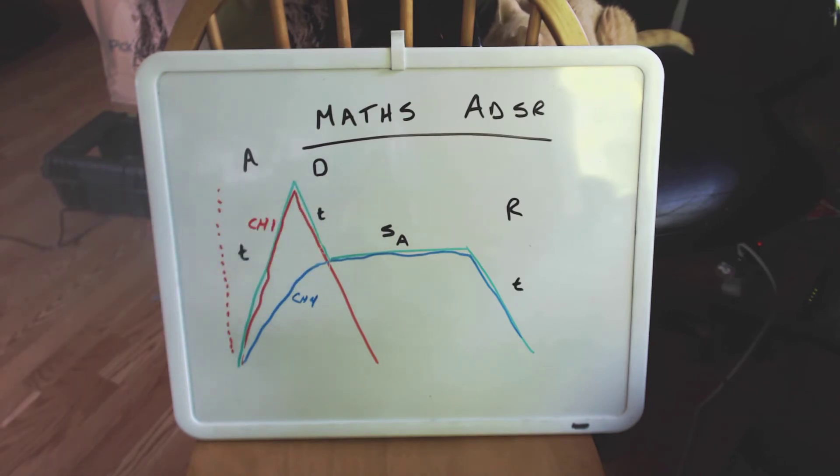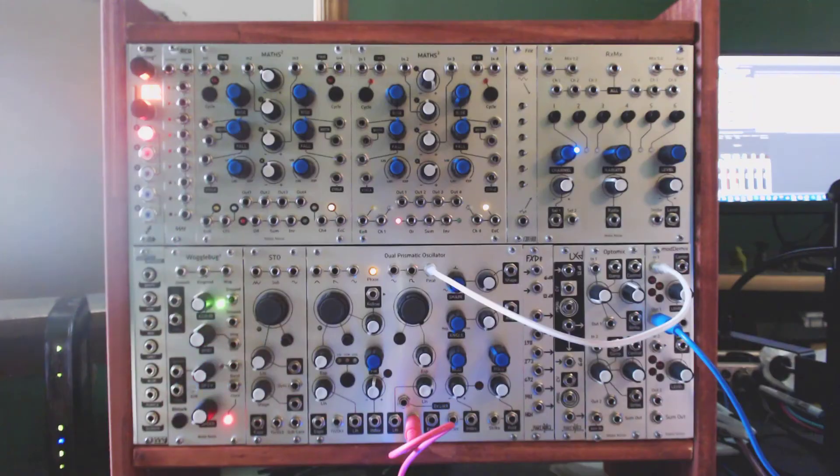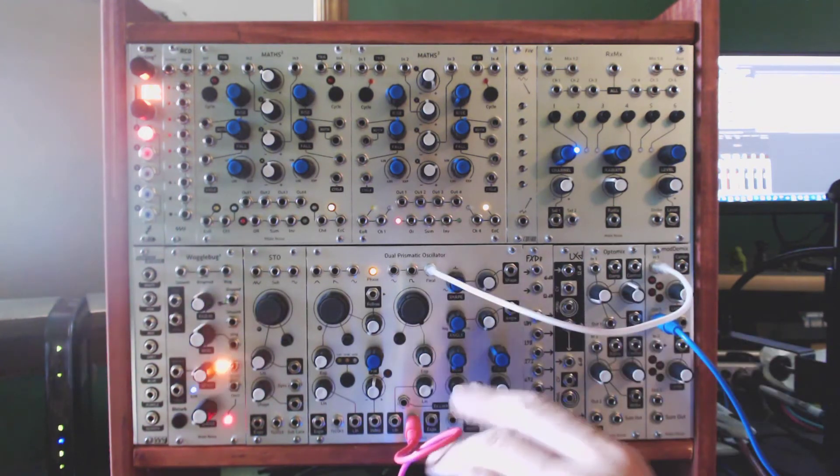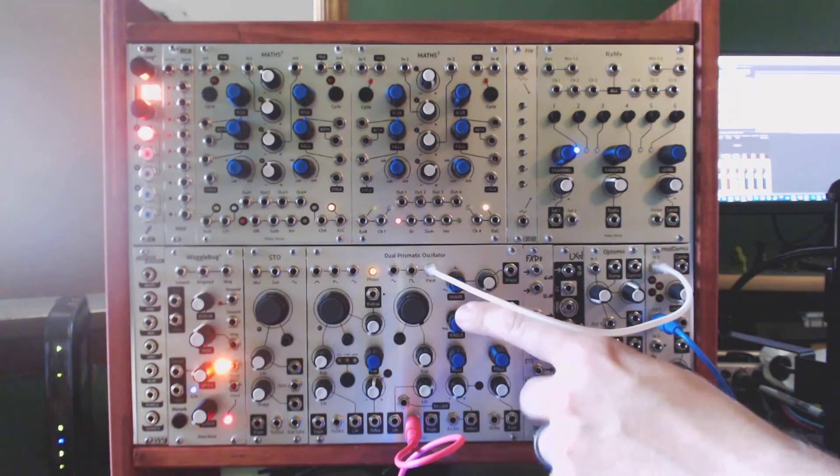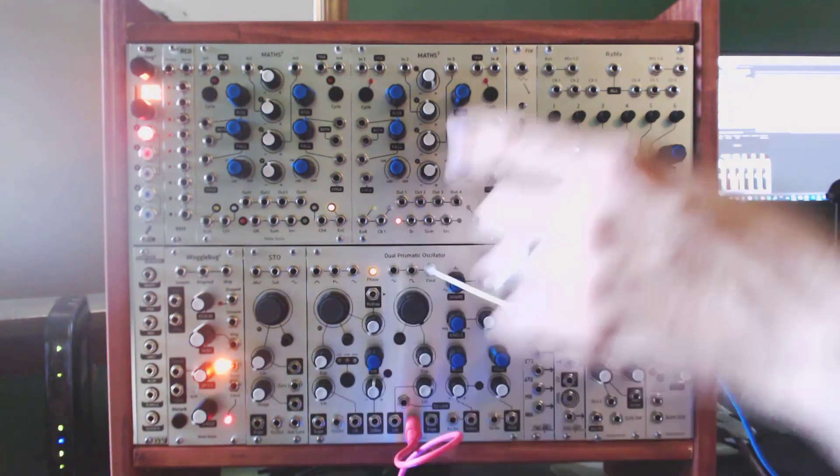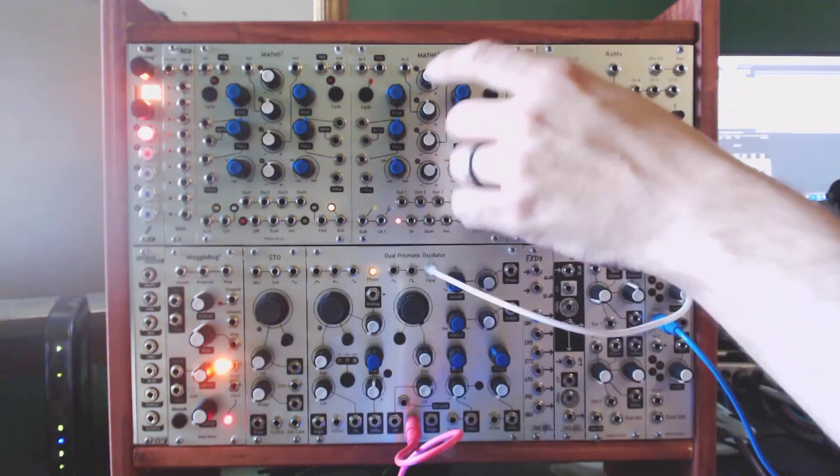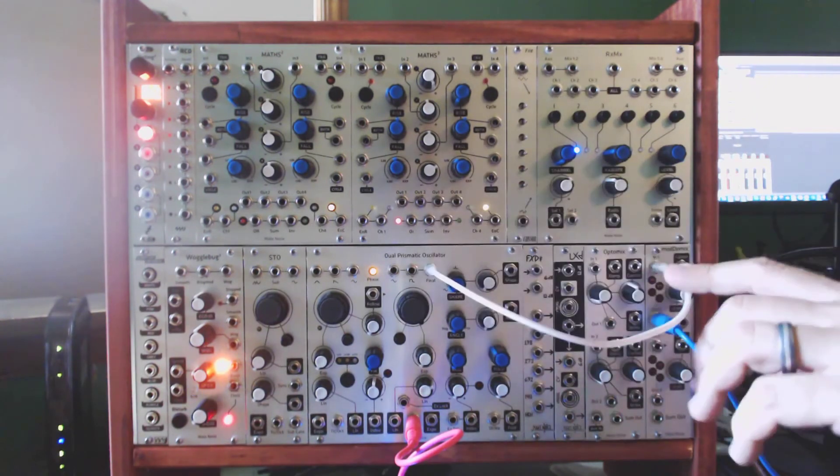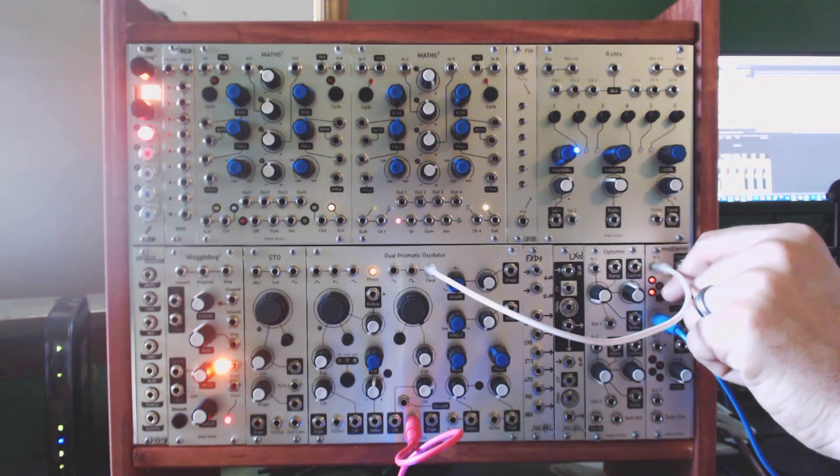So let's take a look at what that looks like on the modular. So here we have our basic setup. I have the keyboard controller down here just off screen, which is going to give us 1 volt per octave input into the DPO. And it's also going to give us 2 triggers or 2 gate signals that I'm going to be sending up to MADS. We're going to be monitoring the final output of the DPO, and that's going into our VCA, which is the moddemix.